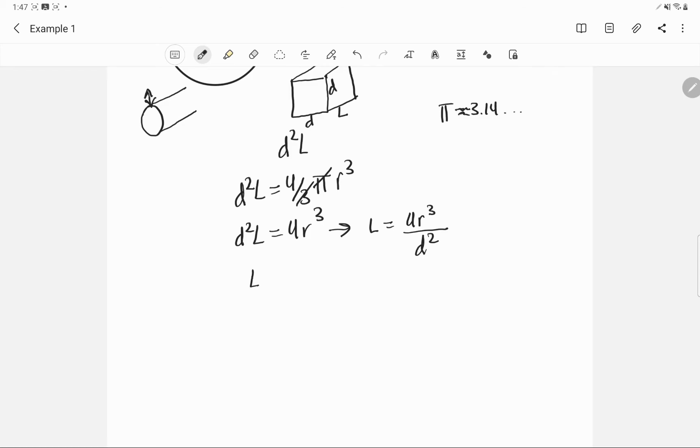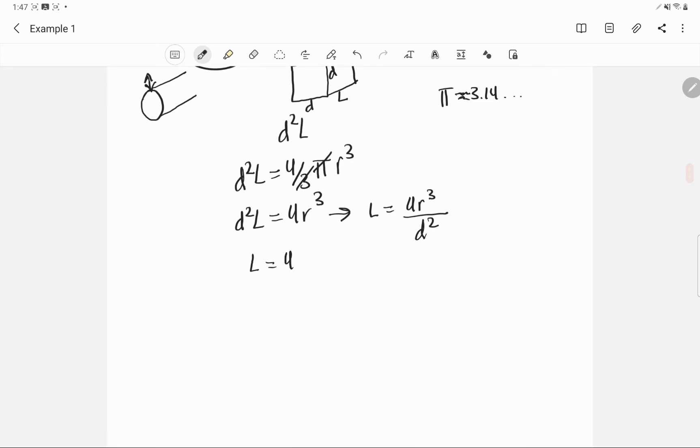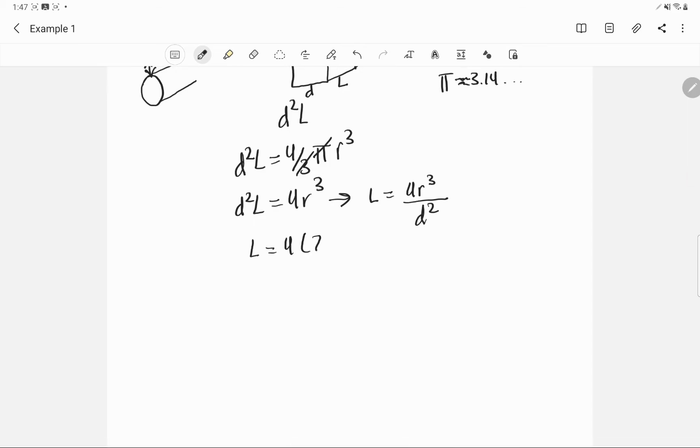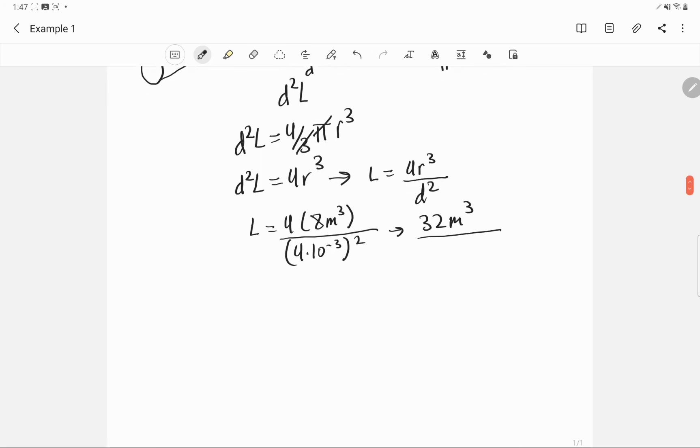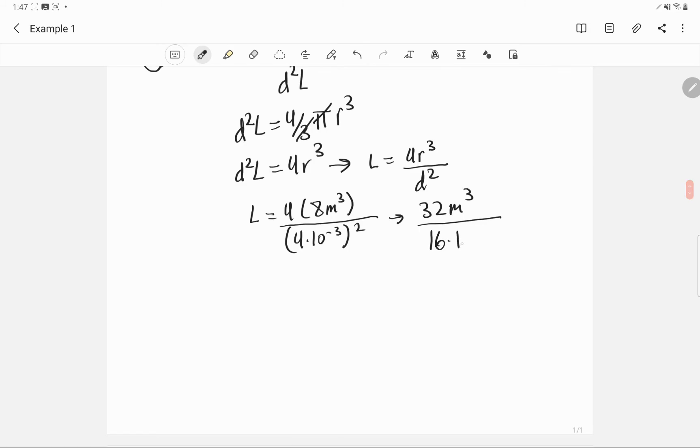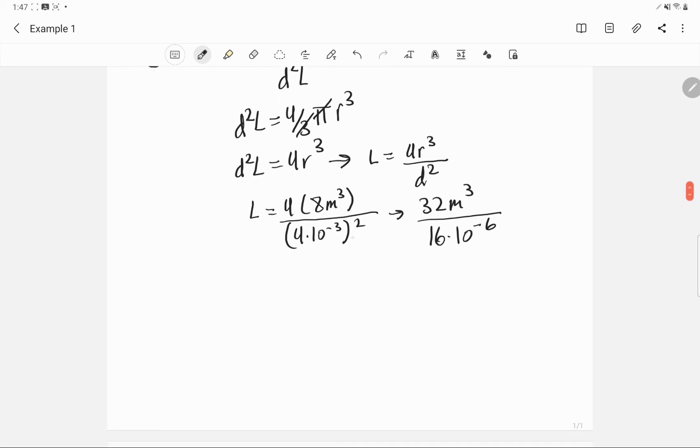So we can now say length is equal to 4 times our radius cubed, which is going to be 8 meters cubed, over our edge length squared, which is going to be 4 times 10 to the negative 3 squared. We can then simplify this to 32 meters cubed over 16 times 10 to the negative 6. And so we can actually, if we're clever, and this is meters squared, can't forget our units.